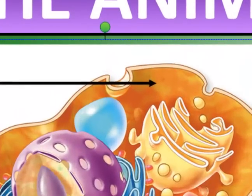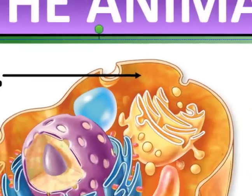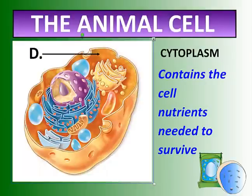We have something called cytoplasm — that's the empty space in between all of the organelles. This empty space actually contains cell nutrients so that the cell can survive. It's almost like the cell eats a part of itself to sustain life.